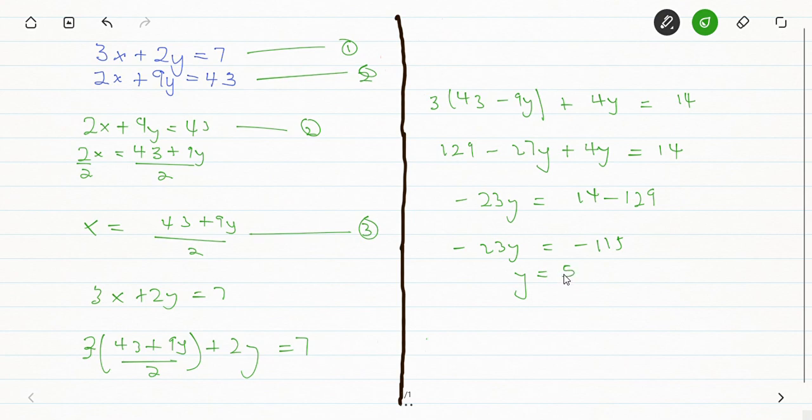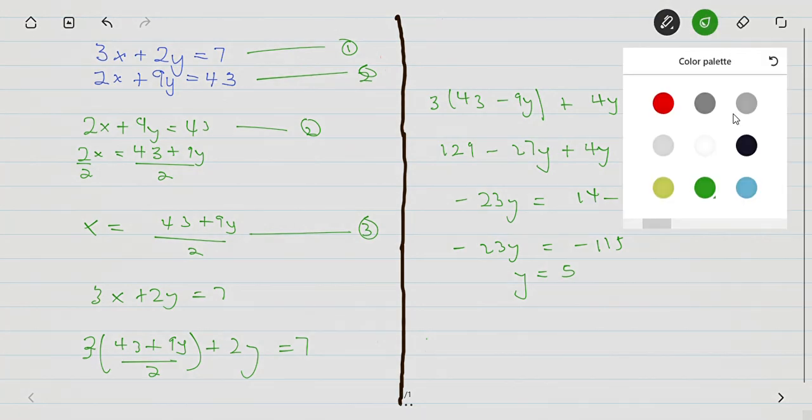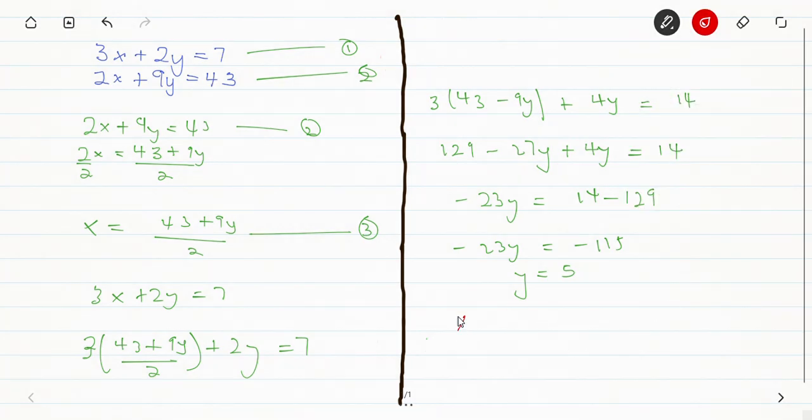So now we have y equals 5. What we can do is put y equals 5 in equation 3, that's the x equation. We have x equals 43 minus 9y all over 2.